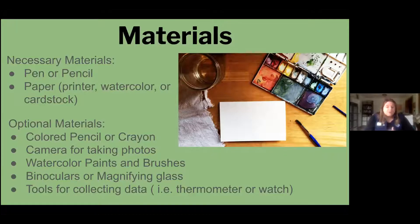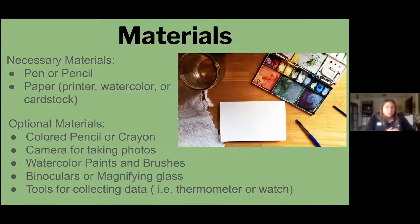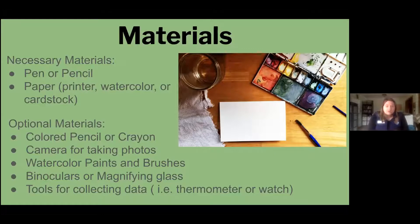Aside from making observations about an organism, other great things to add into your nature journal are data about your surroundings: temperature, wind speed, soil moisture. If I was to go out and look for snails in the wild, I might want to collect data on how moist the soil is, which could influence where the snails are. Using a watch to record how long your observations are is also helpful. The more specific you can be in collecting your data, the more inferences you can pull from your nature journaling. Think about some tools that could be helpful for you when journaling about creatures in the wild.